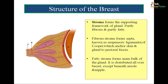The stroma of the breast is of two types: fibrous stroma and fatty stroma. Fibrous stroma is known as the ligaments of Cooper — these are fibrous strands connecting and anchoring the skin to the deep fascia or pectoral fascia. The fatty stroma forms the bulk of the gland and is distributed all over the breast except beneath the nipple and the areola. So the three components of the breast are skin, parenchyma or glandular tissue, and stroma divided into fibrous and fatty stroma.